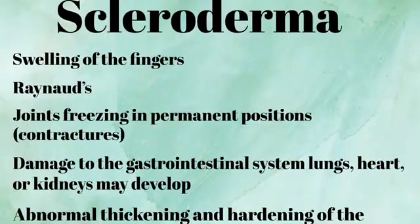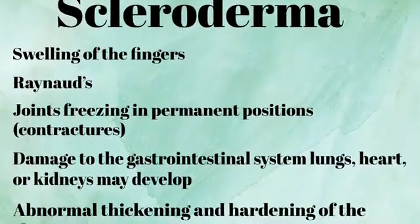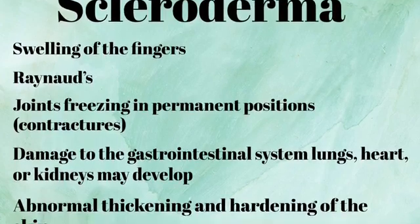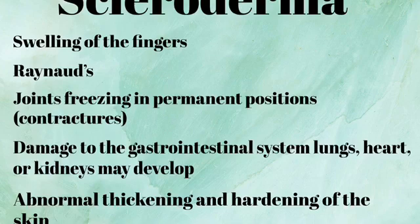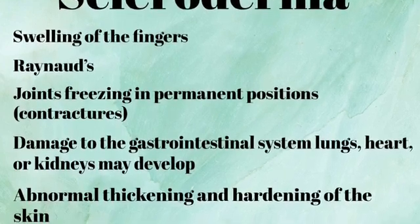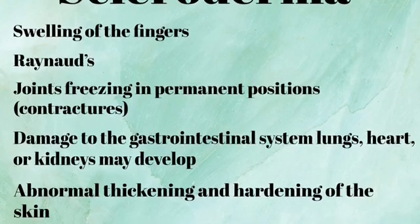The next disease is scleroderma. Symptoms of scleroderma include swelling of the fingers, Raynaud's, joints freezing in permanent positions called contractures, damage to the gastrointestinal system, lungs, heart and kidneys, and also abnormal thickening and hardening of the skin.